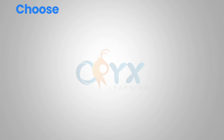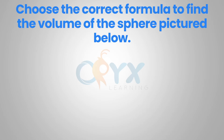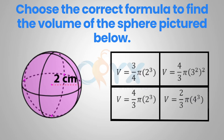Choose the correct formula to find the volume of the sphere pictured below. The volume of a sphere is v equals four-thirds pi r cubed. We can see in the diagram that the radius is 2, so substituting 2 in for the radius in the formula, we get v equals four-thirds pi times 2 to the third.